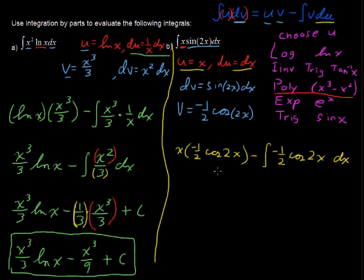Alright, let's wrap this up. So we have negative x over 2 times the cosine of 2x. That's this part here. We have minus a negative, so I'm just going to fix that right away. That's a plus. Minus a negative is a plus. So I'll say plus now one-half times the integral of cosine of 2x. And that is another one-half times the sine of 2x.